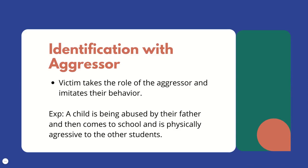Identification with aggressor: this is when a victim takes the role of the aggressor and imitates their behavior. This defense mechanism is a way to protect oneself from harm — if you can't beat them, join them. A common example: a child being abused by their father comes to school and is physically aggressive to other students. If you see children acting out, in some cases it might be what they see modeled at home — they're identifying with the aggressor.